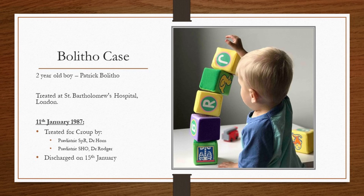Patrick Bolitho was a two-year-old boy living in London. He was treated for croup at St. Bart's Hospital. On the 11th of January 1987, he was reviewed by two doctors: Dr. Roger, a paediatric SHO, and Dr. Horne, the registrar. They treated him medically and discharged him a few days later on the 15th of January.